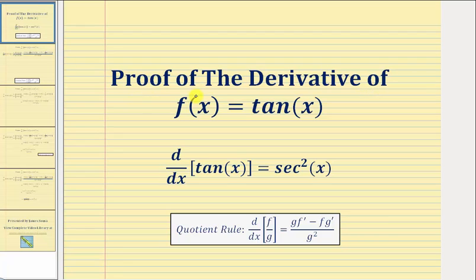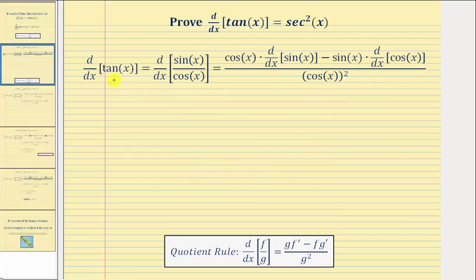Welcome to a proof that the derivative of tangent x with respect to x is equal to secant squared x. To begin our proof, we'll rewrite tangent x using the quotient identity that tangent x is equal to sine x divided by cosine x.